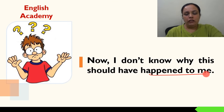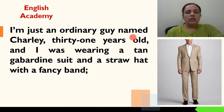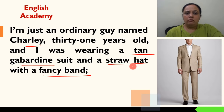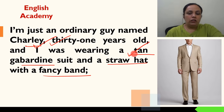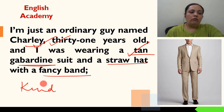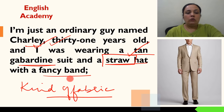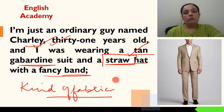Now, I don't know why this should have happened to me — ab achanak se unke saath kuch hota hai. I'm just an ordinary guy named Charlie, 31 years old, and I was wearing a tan gabardine suit and a straw hat with a fancy band. Tan ek color hai — light brown color hota hai. Gabardine is a kind of fabric. Toh gabardine se bana suit pehna hua tha, aur sir pe unhone straw se bani hui ek hat pehni hui thi, aur uska jo band tha woh bahut hi fancy tha.